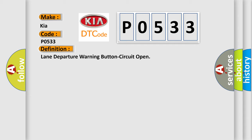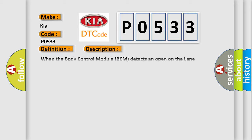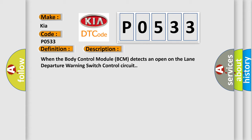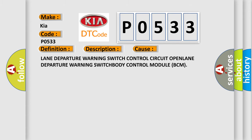Here is a short description of this DTC code. When the Body Control Module (BCM) detects an open on the Lane Departure Warning Switch Control Circuit, this diagnostic error occurs. The most common causes involve the Lane Departure Warning Switch Control Circuit open, the Lane Departure Warning Switch itself, or the Body Control Module (BCM).